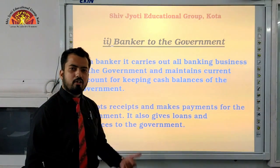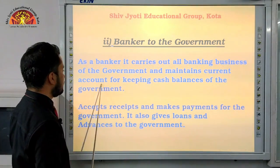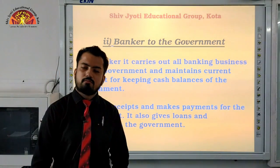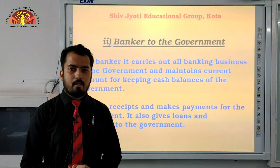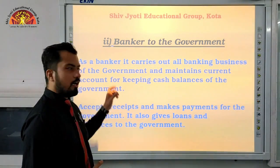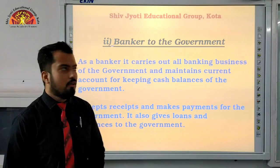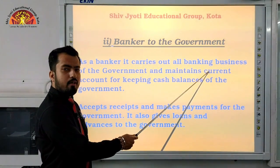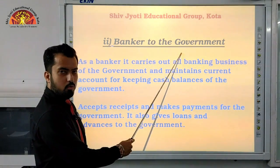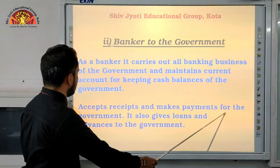A current account is used when a person or entity has more than ten or twenty transactions per day. No interest is received by the account holder on a current account. Similarly, since the government has many transactions in a single day, a current account is opened in the central bank to manage them. The central bank also accepts receipts and makes payments for the government.